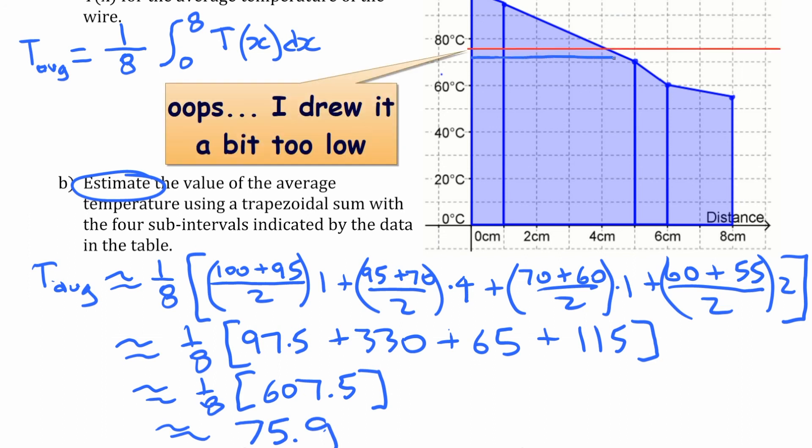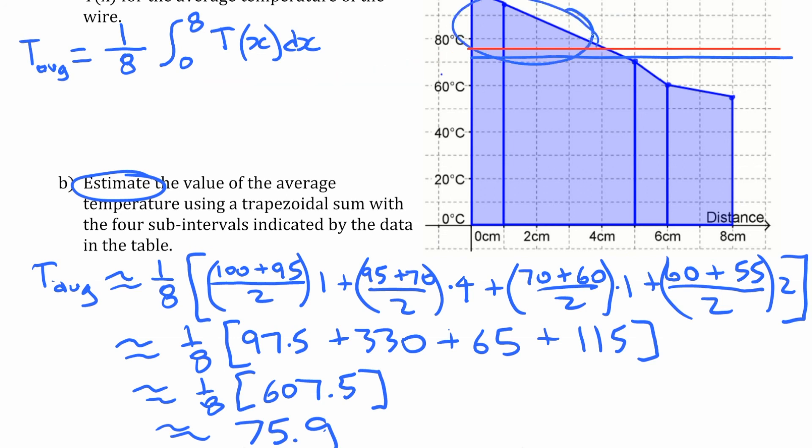So somewhere in here, just above 75, that's the average temperature. So more or less what you're doing is you're taking this area up here, and you're kind of filling that in down there, and seeing where that averages.